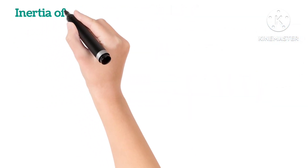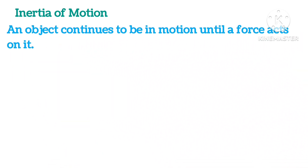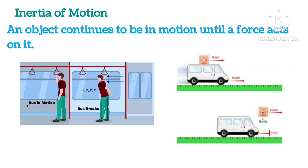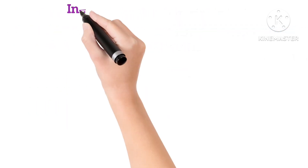Inertia of Motion. An object continues to be in motion until a force acts on it. A person standing in a moving bus falls forward if the driver applies brakes suddenly. In this condition, the legs of the person which are in contact with the bus come to rest, while the rest of the body is in motion, so the passenger feels a jerk. Similarly, a box on top of a moving vehicle falls down as soon as the brakes are applied, as the vehicle comes to rest but the box is still in the state of motion.